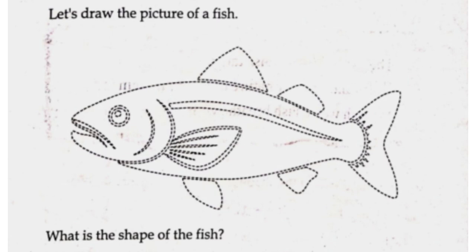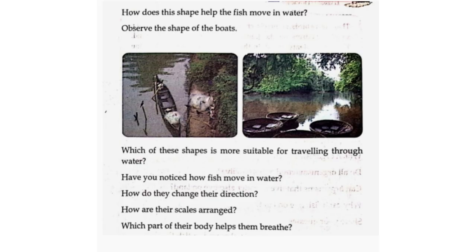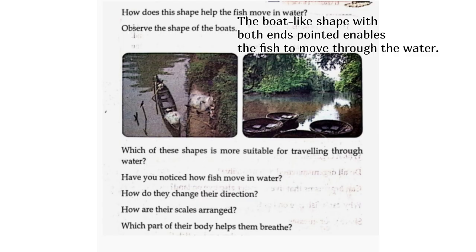What is the shape of the fish? Boat-like shape. How does this shape help the fish move in water? The boat-like shape with both ends pointed enables the fish to move through the water. Observe the shape of the boats. Which of these shapes is more suitable for travelling through water? The boat in the first picture.